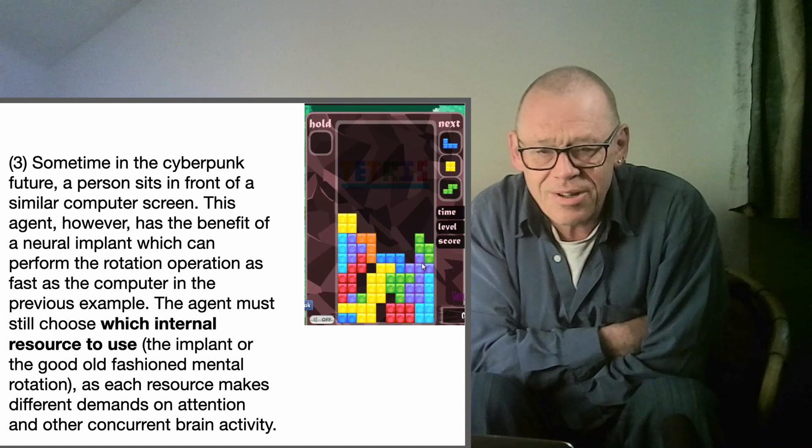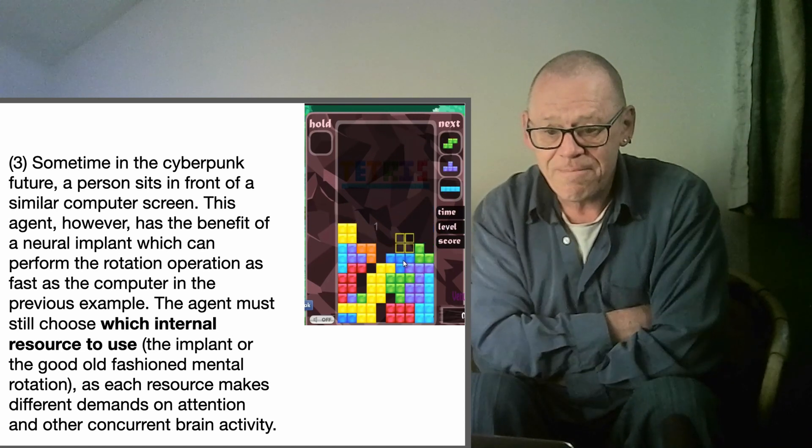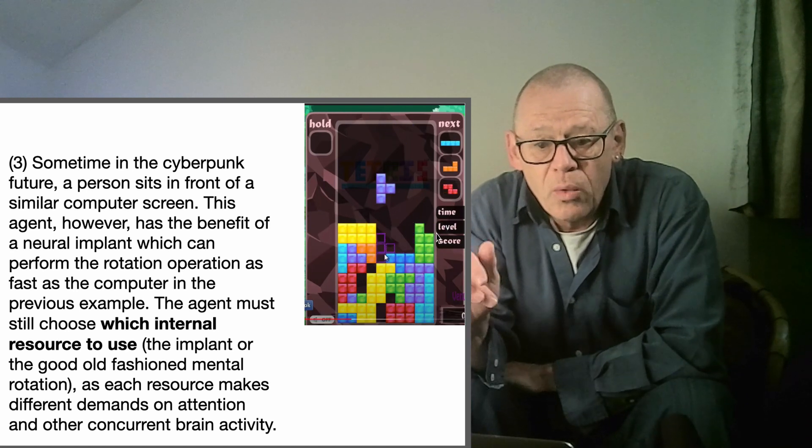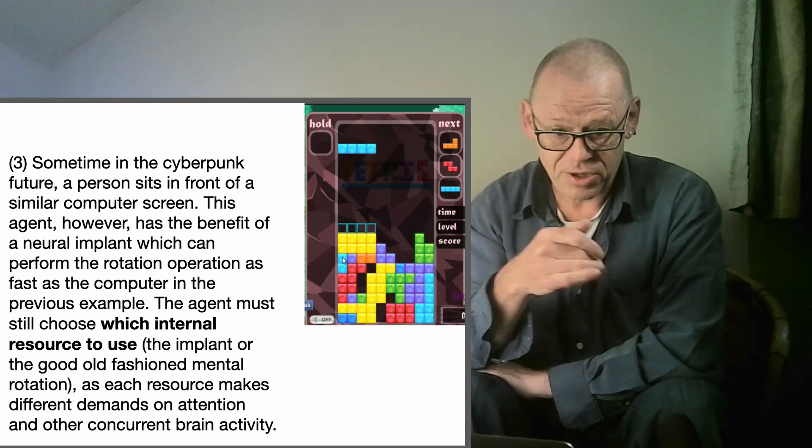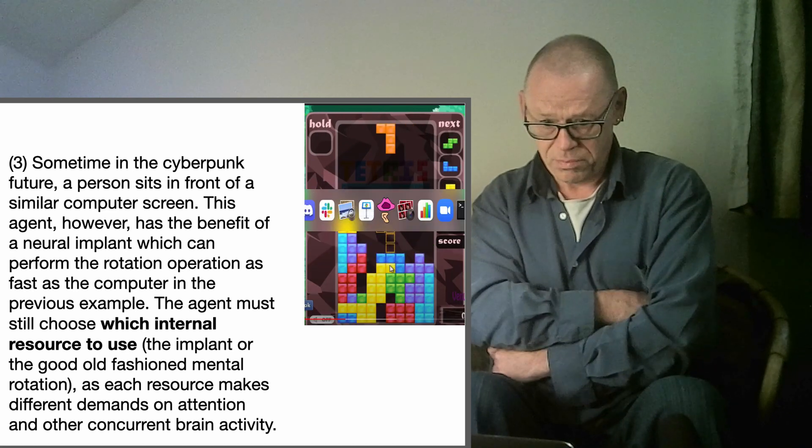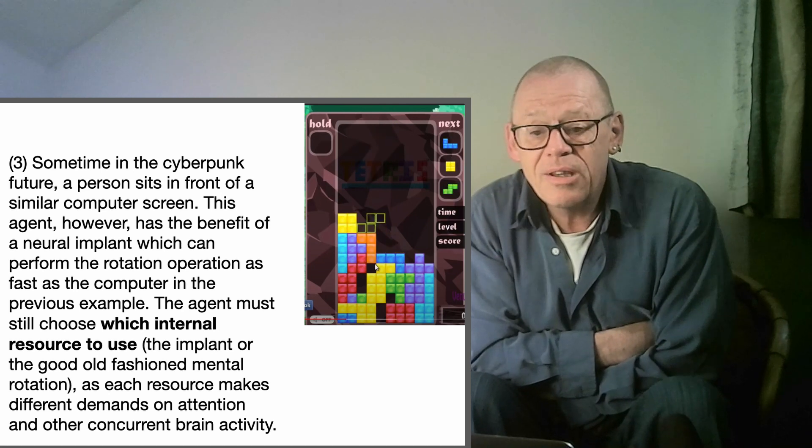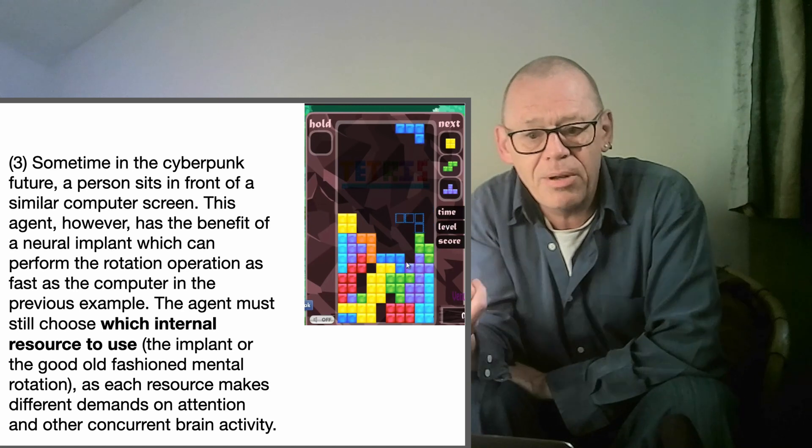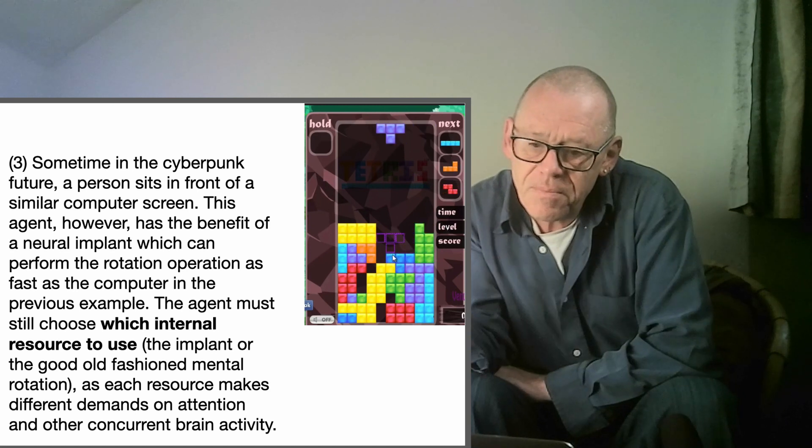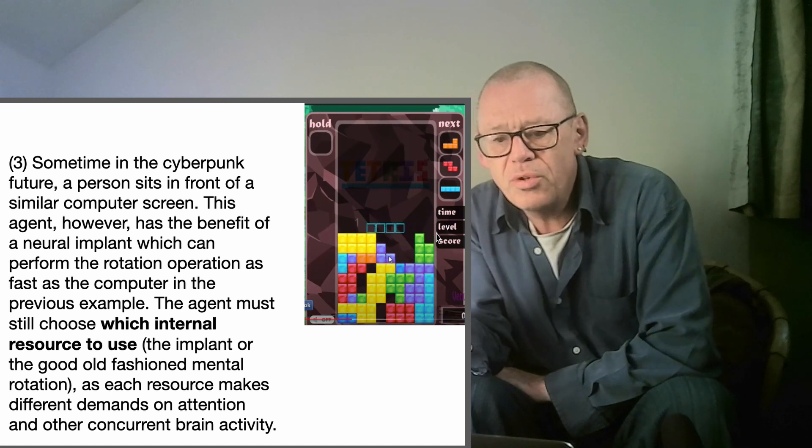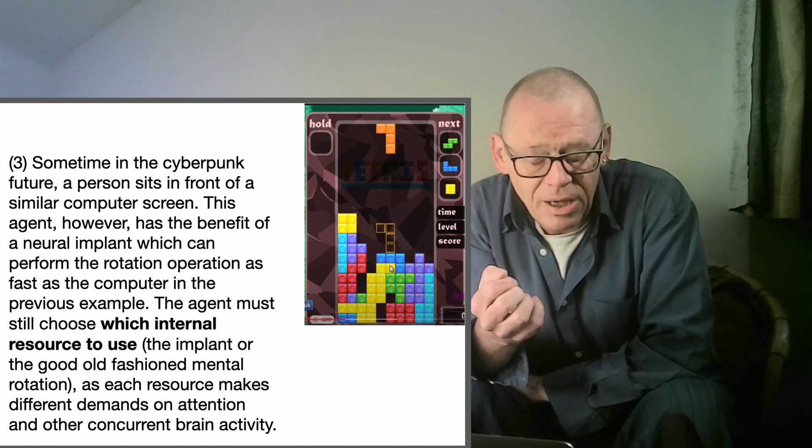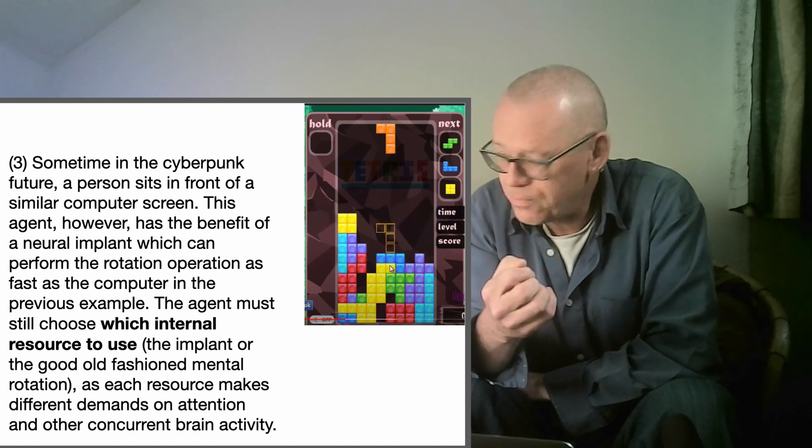But they consider a third case, and here Andy Clark's cyberpunk eyes maybe come back. They imagine a cyberpunk future in which a neural chip has been implanted, which will perform the operation, the rotation operation. So now the person can sit on their hands and the piece is rotated as it goes down. And in this imagined future, they can choose which internal resource to use, the implant or good old-fashioned mental rotation. In considering these three, they are asking you to test your assumptions about where you place boundaries, where you see the subject as being, and what you consider to be the world. Very useful examples.